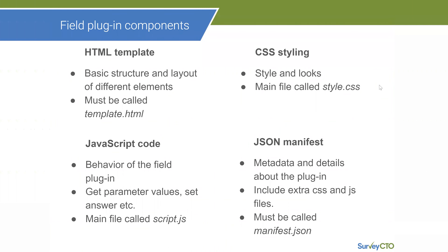Then you have JavaScript code. With JavaScript you are able to manage the behavior of the field plugin — you can capture data, process it, and change how the field plugin executes. The main file is called script.js. And then you've got the JSON manifest, which is metadata about the field plugin where you can include things like extra CSS files. This must be called manifest.json. So those four files — template.html, style.css, script.js, and manifest.json — combined together allow you to manipulate how a field plugin looks and works.